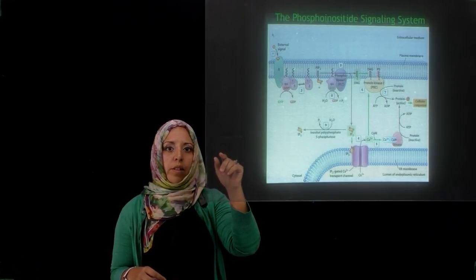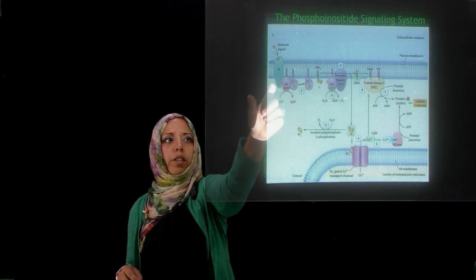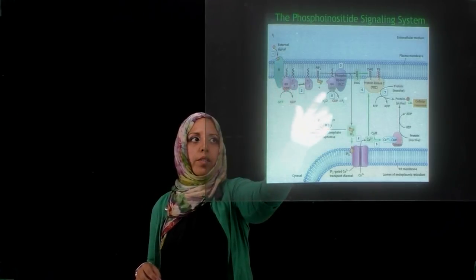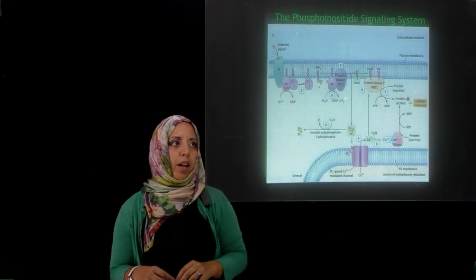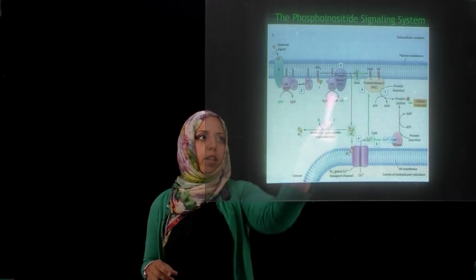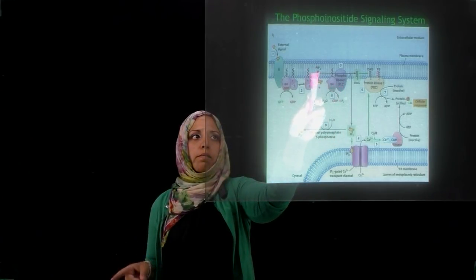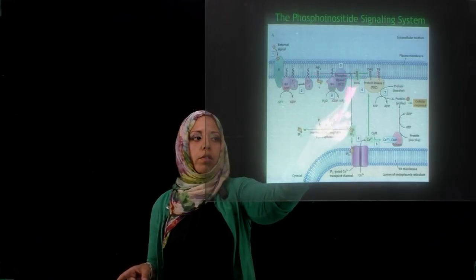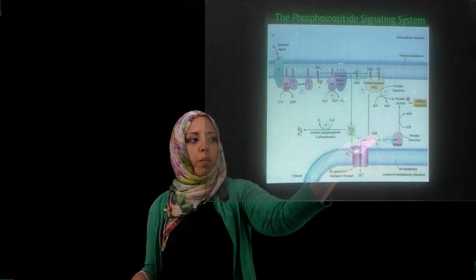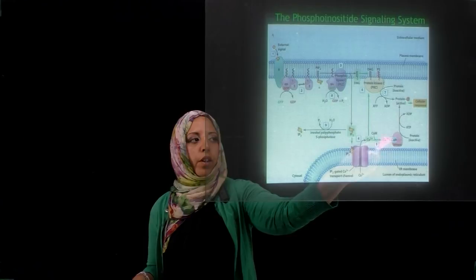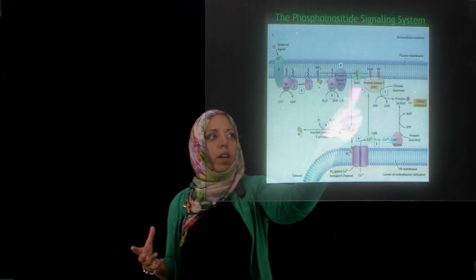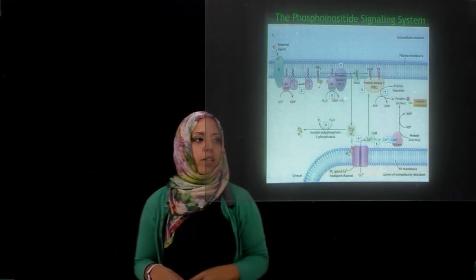The binding of a signal to its receptor triggers a conformational change within the cytoplasmic end, which activates the G protein. Once active, its alpha subunit dissociates from the gamma and beta subunits, activating phospholipase C. Once phospholipase C is activated, it converts PIP2 into DAG and IP3. IP3 activates a calcium channel within the ER, and calcium can then bind to calmodulin, activating a number of kinases, or bind to protein kinase C, which is associated with DAG and also activated.